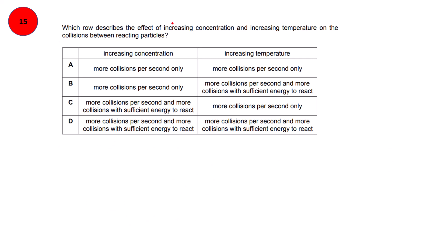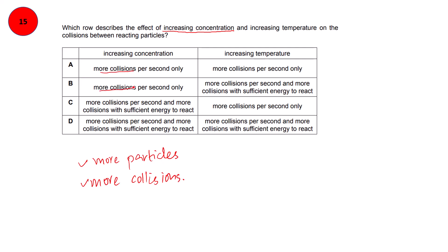Which row describes the effect of increasing concentration and increasing temperature on collisions between reacting particles? Increasing concentration means there are more particles per unit volume, so there will be more collisions. Looking at the first column, options A and B both say more collisions per second — that is correct. Options C and D say more collisions with sufficient energy, but concentration has nothing to do with the energy of particles, so C and D cannot be correct.